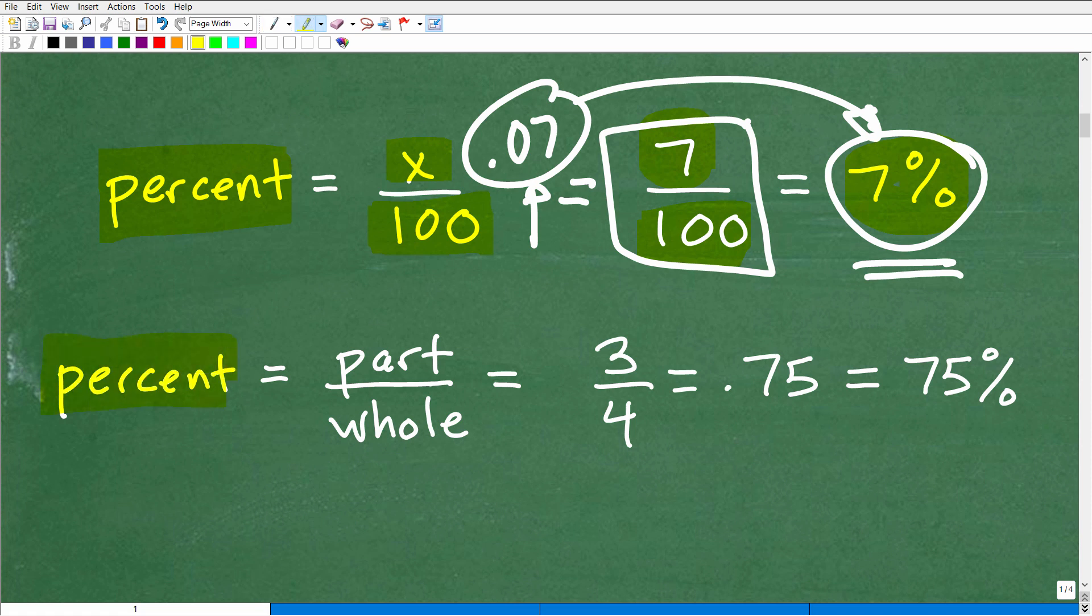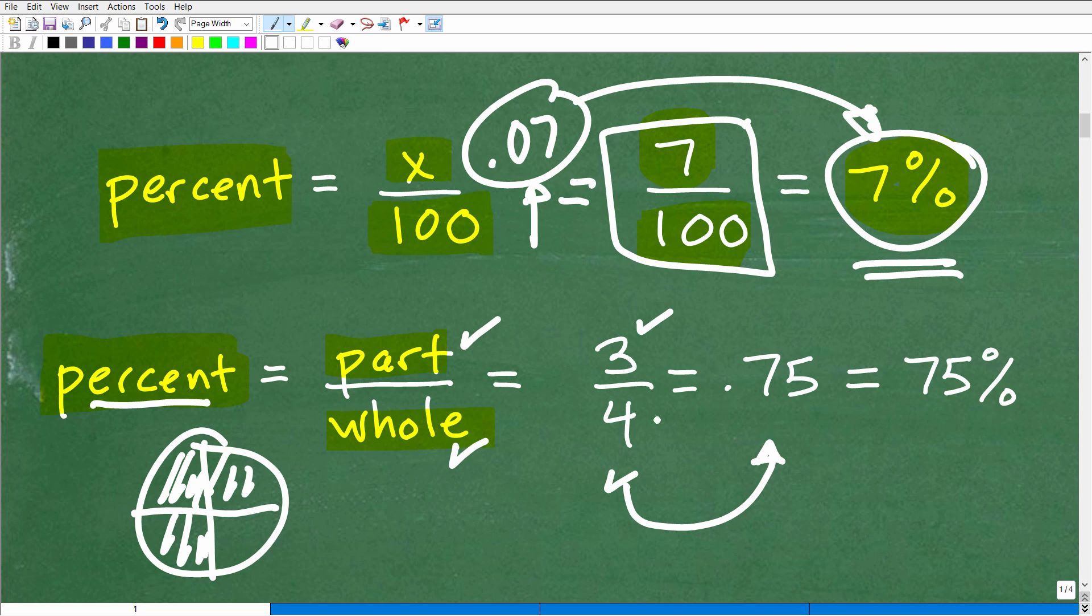If I go into my calculator, take 7 divided by 100, I get the decimal 0.07. So this decimal and this fraction are both equivalent to this notation, 7 percent. Now, there's another way to kind of think about percent, and that is a part out of a whole. So let's suppose I have a pizza here. Let's say there's four slices, one, two, three, four. And I wanted to know what percent of the pizza is three slices. So what percent is three out of four? So three would be the part, and the whole pizza is four. So three out of four, that would be three divided by four, which is 0.75. But we want to express that as a percent, so we would multiply this by 100, and we would get 75 percent.